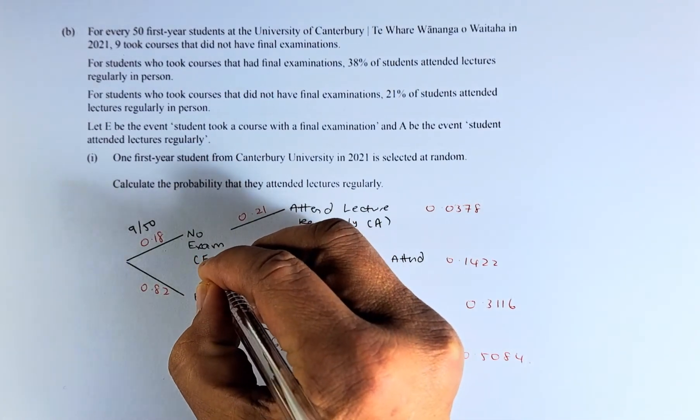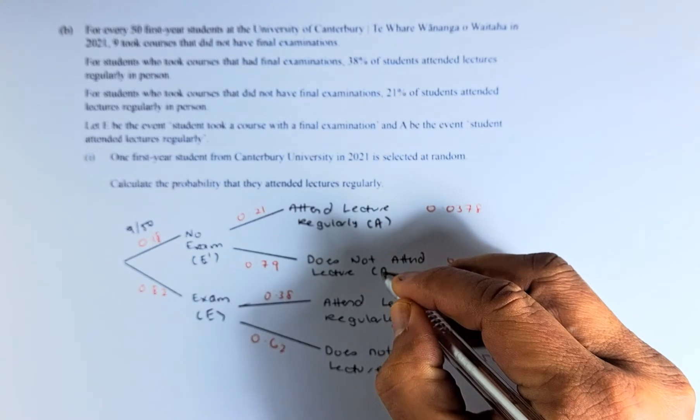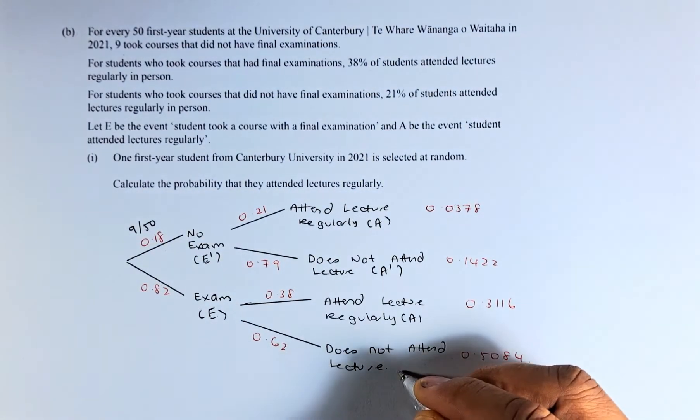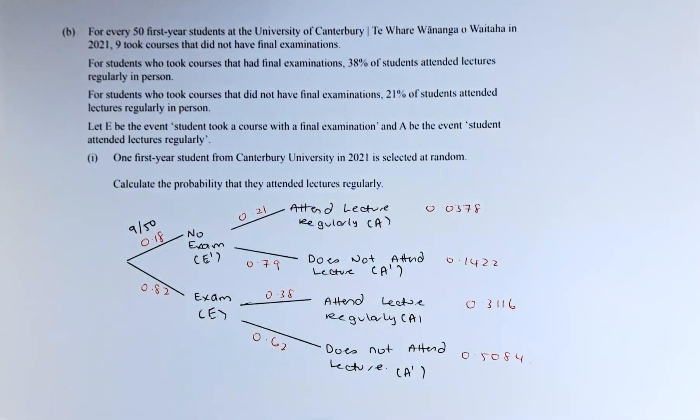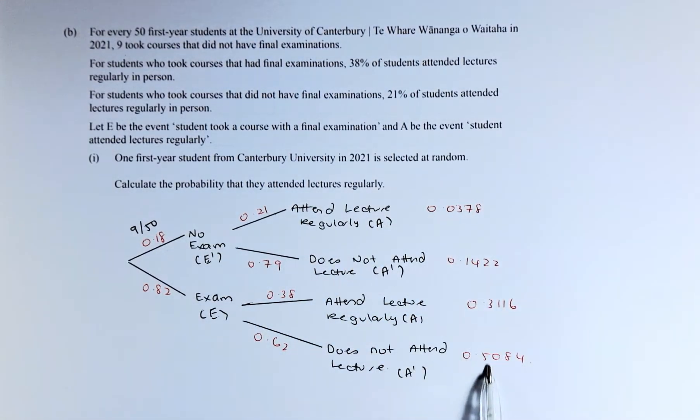Not E is no exam, represented by the complement. Not A means A complement. And not A is the not complement. Once we have these diagrams, we can calculate the probability of all these probabilities.